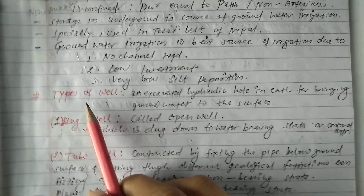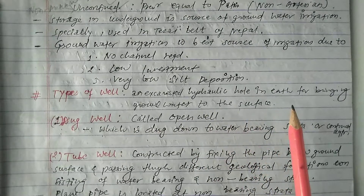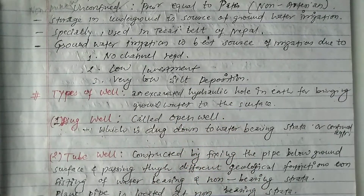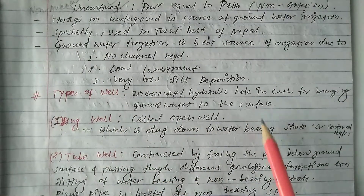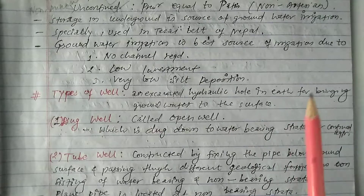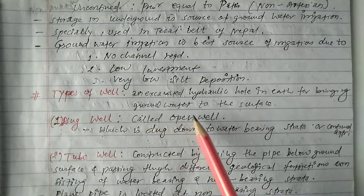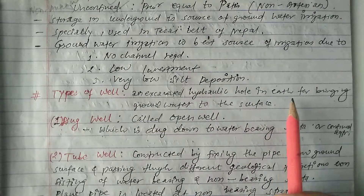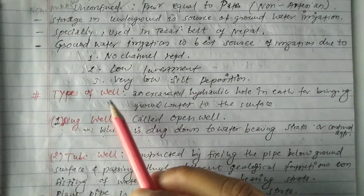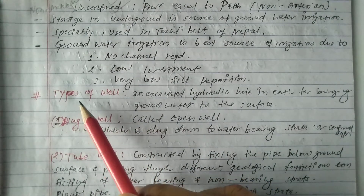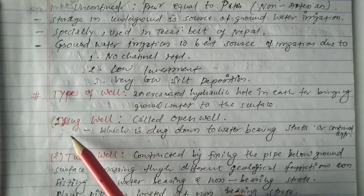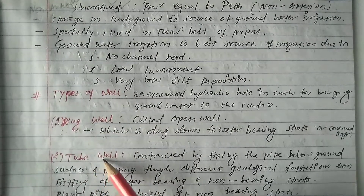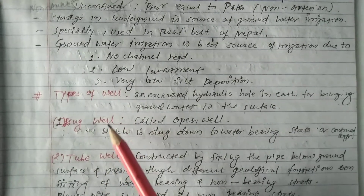A well is an excavated hydraulic hole in the earth for bringing groundwater to the surface. There are basically two types of well: the first is a dug well, also called an open well, and the second is a tubewell. Let's see each one by one.